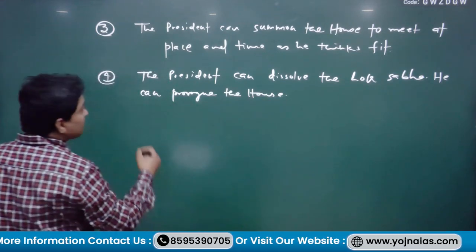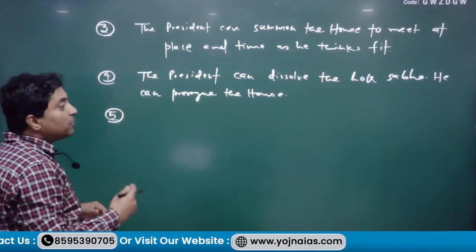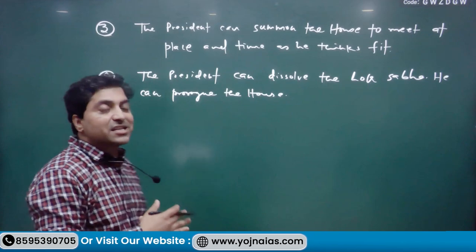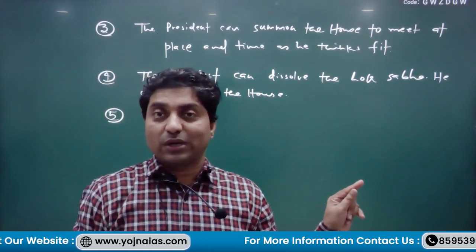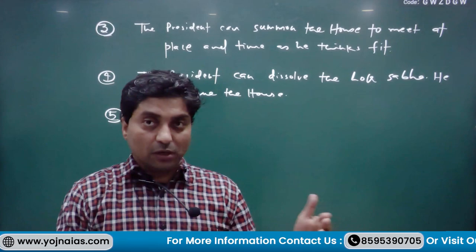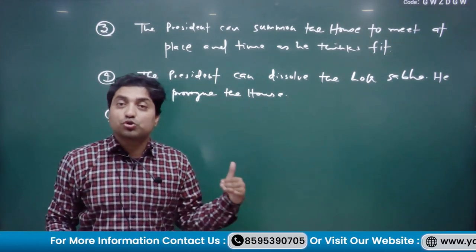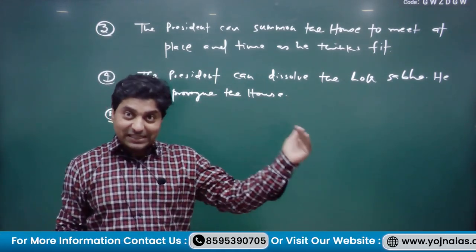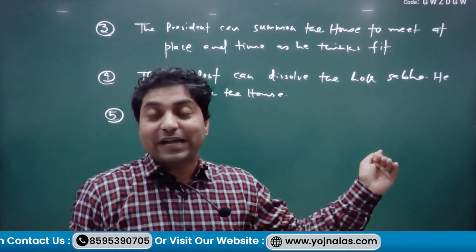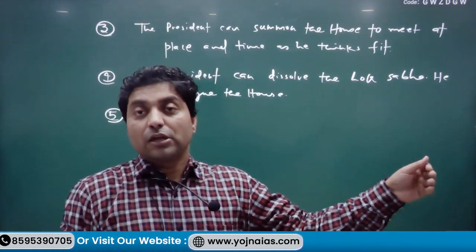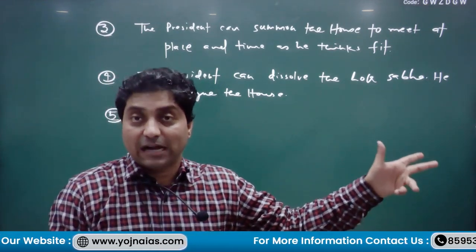If the Parliament passes a bill, it goes to the President for his assent. Currently Draupadi Murmu is the President, so it goes to her assent. Without the assent of the President, not a single bill becomes an Act.